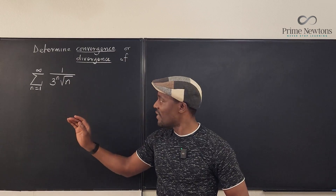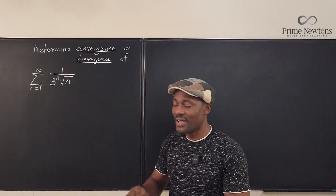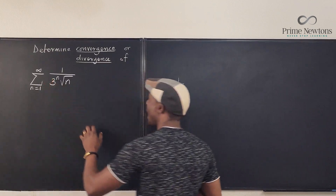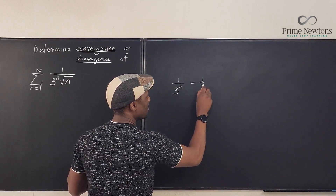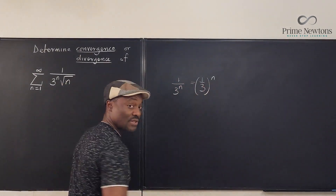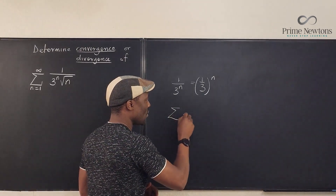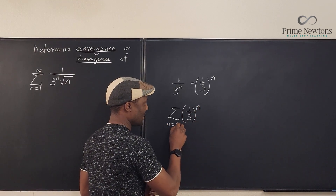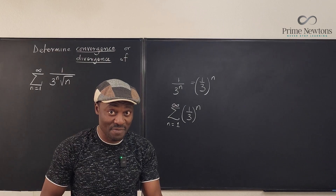Looking at this, there are two functions. One causes convergence because if you write this as 1 over 3 to the n and you ignore the other, you can treat this as (1/3) raised to power n because 1 to the n is still 1 and this is 3 to the n. Whenever you have a series with a common ratio less than 1, this will always converge.